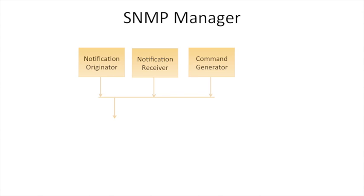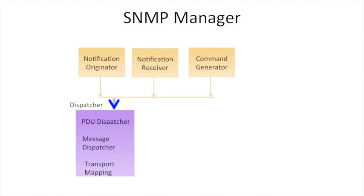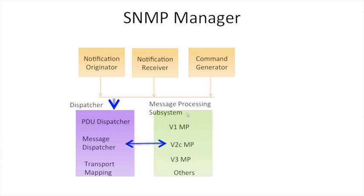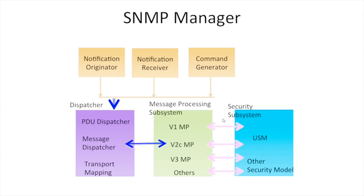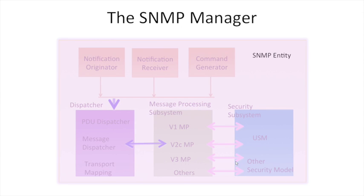The SNMP entity includes the SNMP engine with all its message subsystems and security subsystem. It contains the notification originator, notification receiver, and command generator. These interact with the PDU dispatcher, message dispatcher, and transport mapping. The message processing system includes SNMPv1, SNMPv2, SNMPv3, and other message processing models. The security subsystem includes the user security model and other security models. The dispatcher dispatches messages over UDP, IPX, or other protocols over the network. This complete structure is referred to as the SNMP entity.